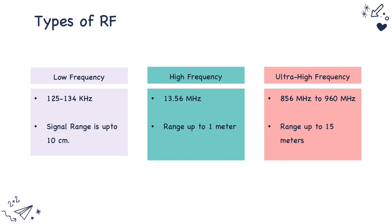When it comes to radio frequency, there are three important bands. The first is the low frequency band, operating at 125 to 134 kilohertz with a signal range of only up to 10 centimeters, but it can penetrate through very solid objects. The next is high frequency at 13.56 megahertz with a range of about 1 meter.